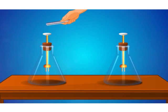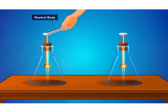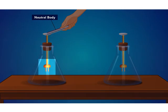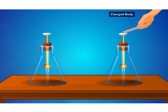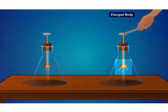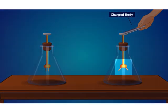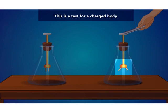Touch the metal disc of the electroscope with a neutral body. You will observe that the leaves remain closed. Now touch the metal disc of the electroscope with a charged rod. The leaves repel each other and fly apart. This is a test for a charged body.